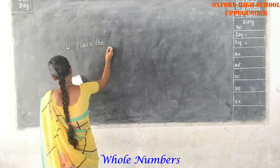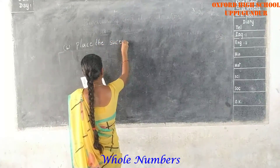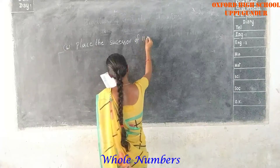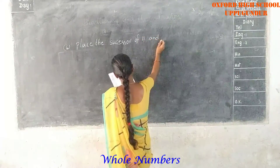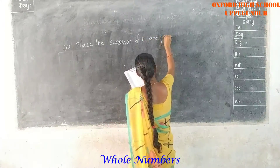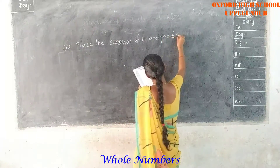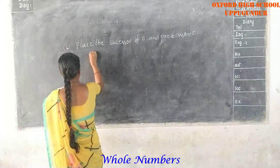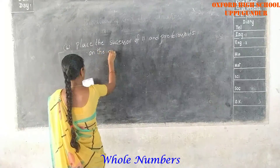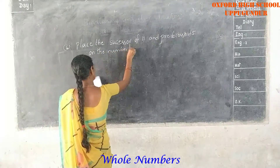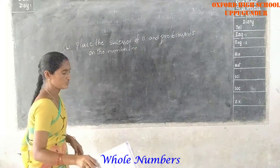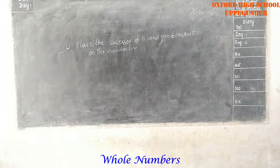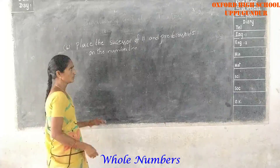The 6th problem: place the successor of 11 and predecessor of 5 on the number line. Listen carefully — place the successor of 11 and predecessor of 5 on the number line.